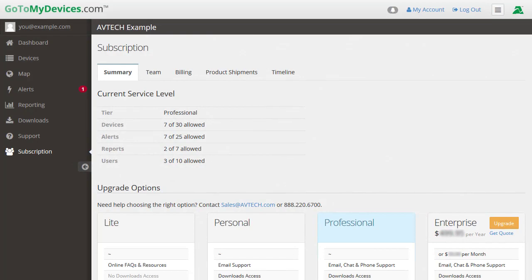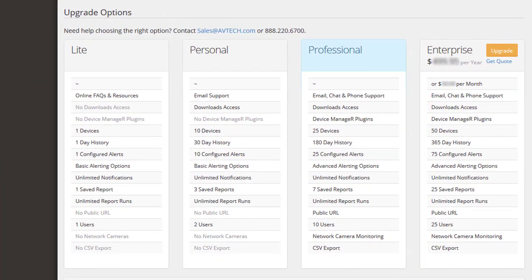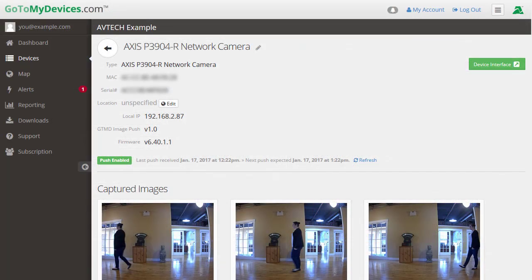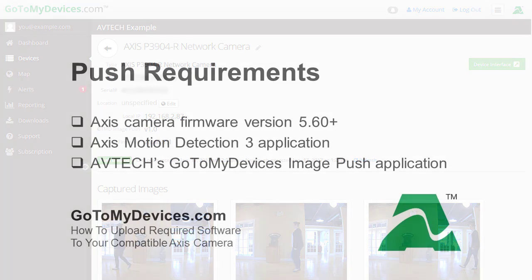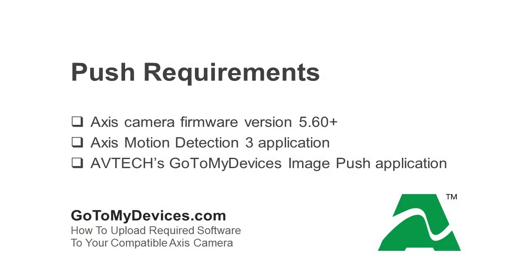If your organization has a GoToMyDevices service plan at the professional level or higher, you may configure your compatible access cameras to push status information and images captured from motion detection directly to GoToMyDevices. In order for your compatible access camera to push data and images to your GoToMyDevices account, it must have the following installed: access camera firmware at version 5.60 or higher, Access Motion Detection 3 application, and AvTech's GoToMyDevices image push application.